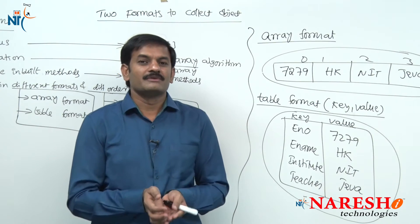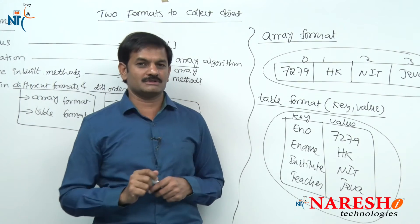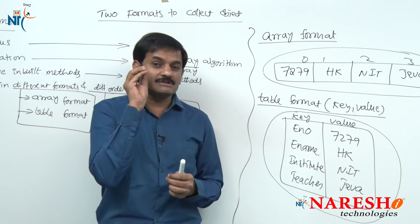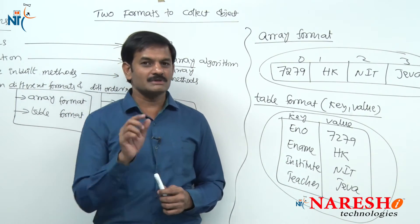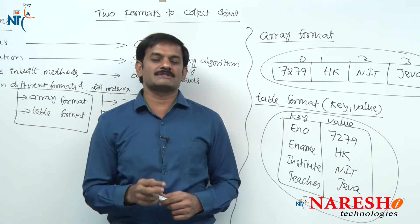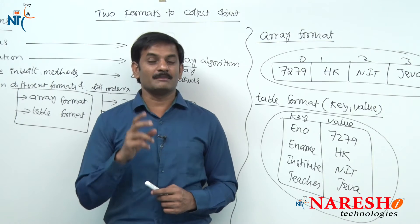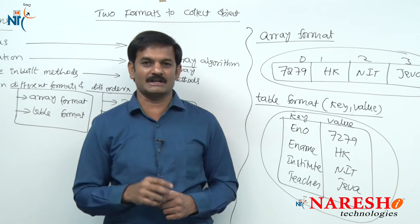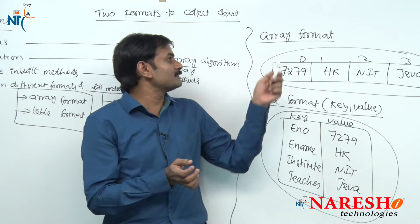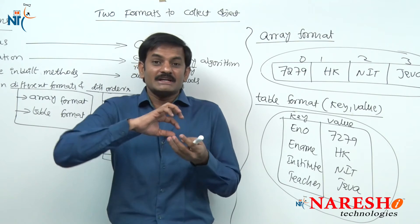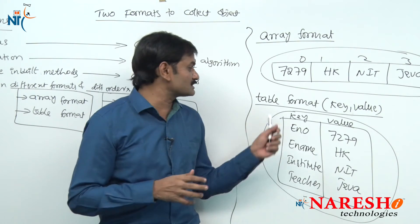On the other hand, if I want to carry one student's complete data — which contains multiple different-type values — then identity is required to differentiate one value from another. In that case, I must choose table format. If you want to carry different-type values or different-type objects from one class method to another, choose table format.